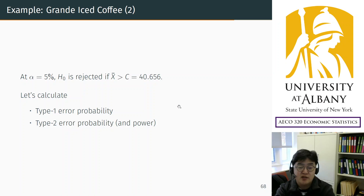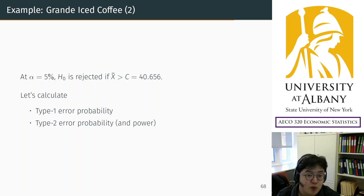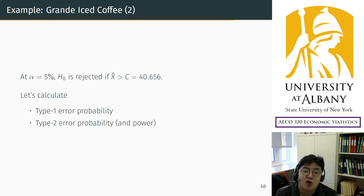In this video, I'm going to finish the Starbucks example with calculation of Type 1 and Type 2 error probabilities.